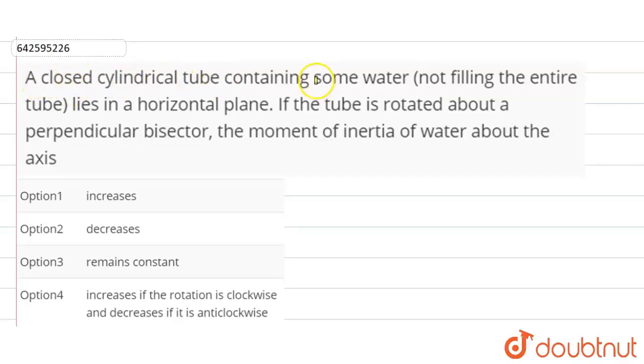Hi, the question is: A closed cylindrical tube containing some water, not filling the entire tube, lies in a horizontal plane.